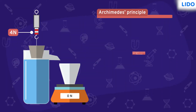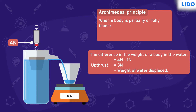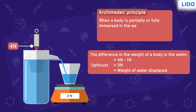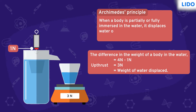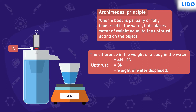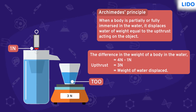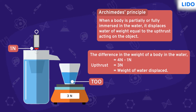Whenever a body is partially or fully immersed in water, it displaces water of weight equal to the upthrust acting on the object. This weight of displaced water plays a role in determining whether the object will float or sink.